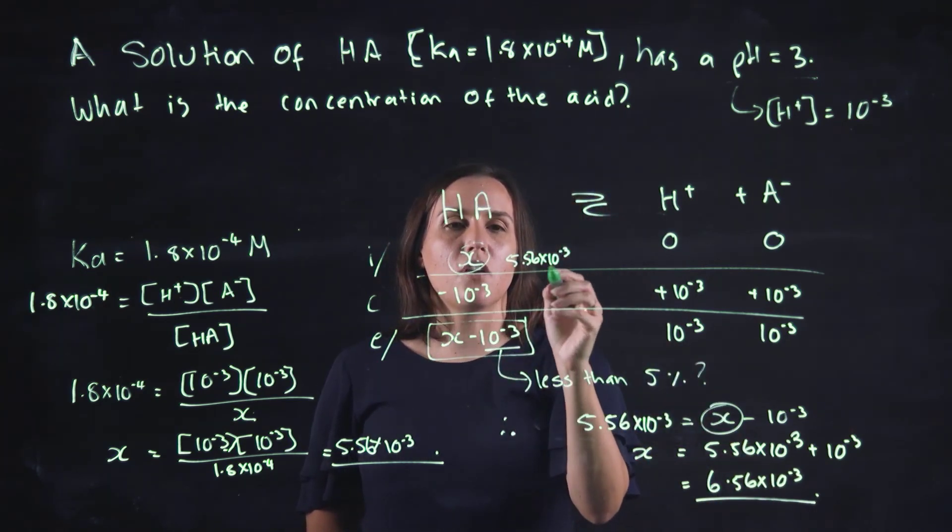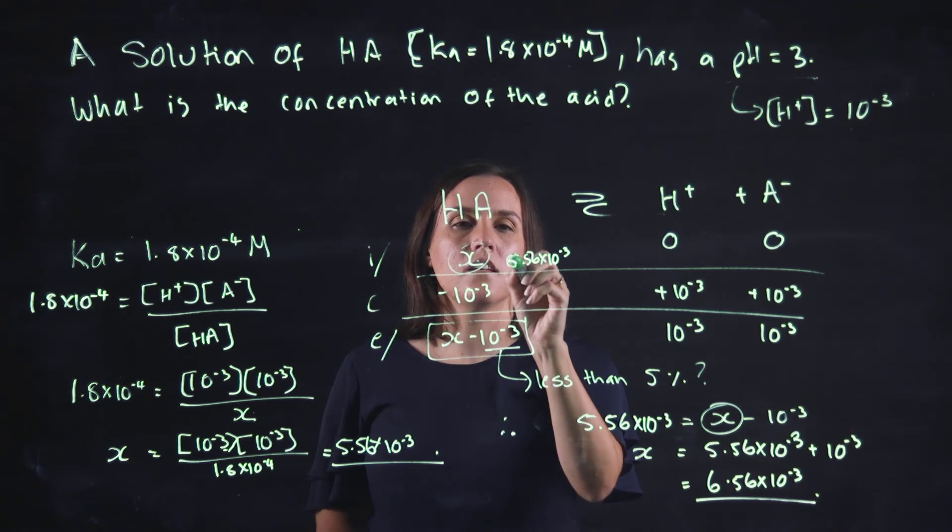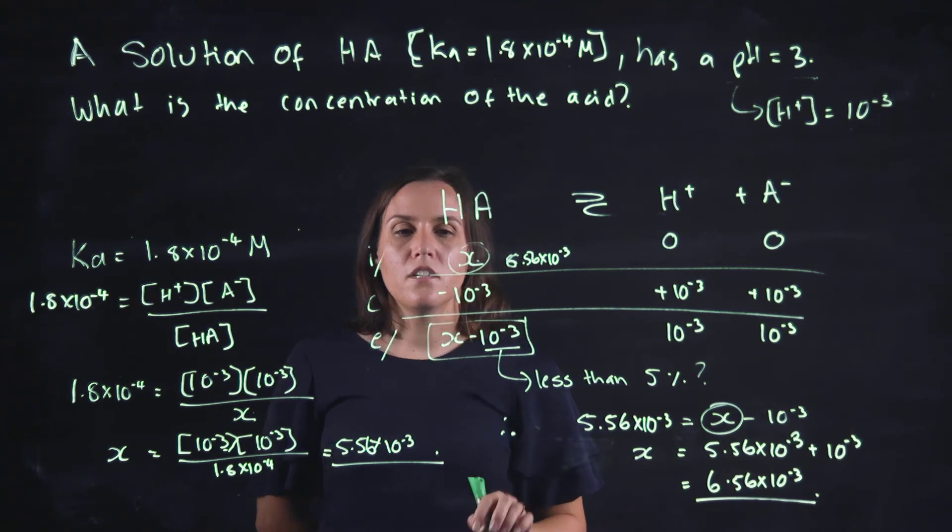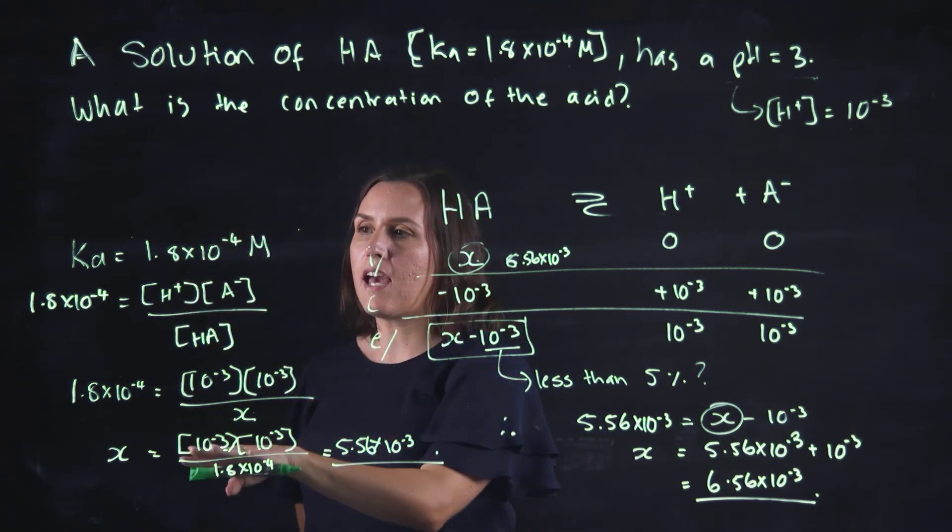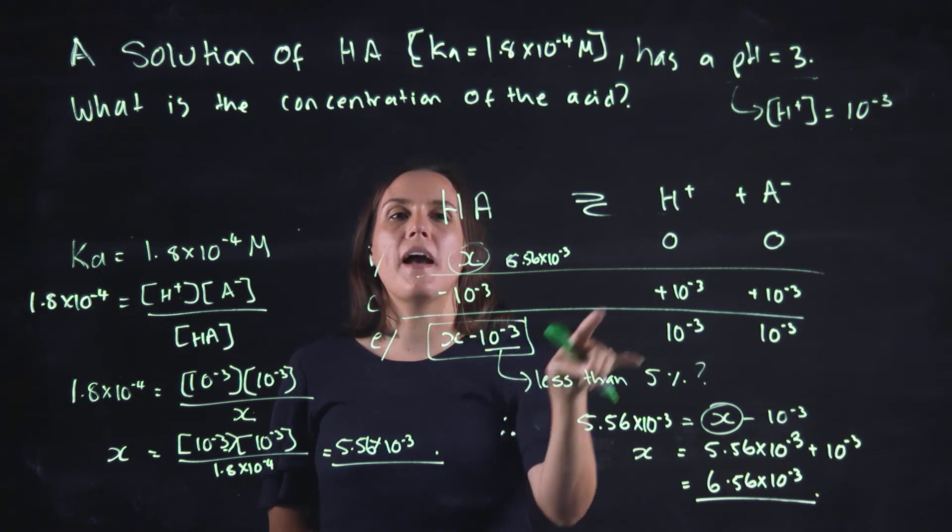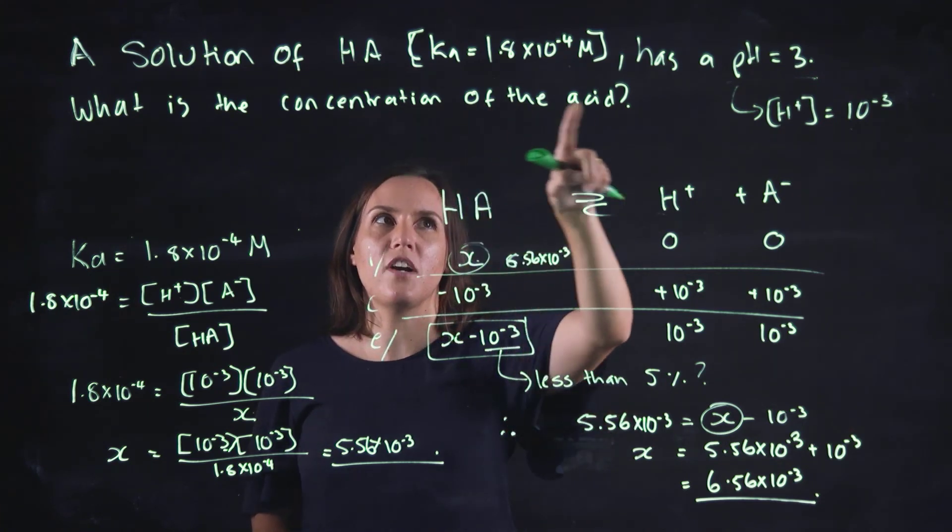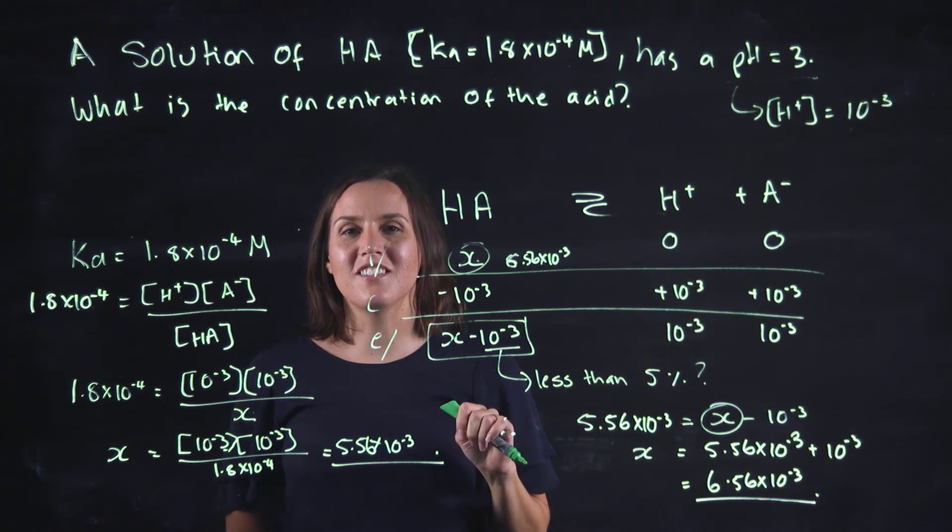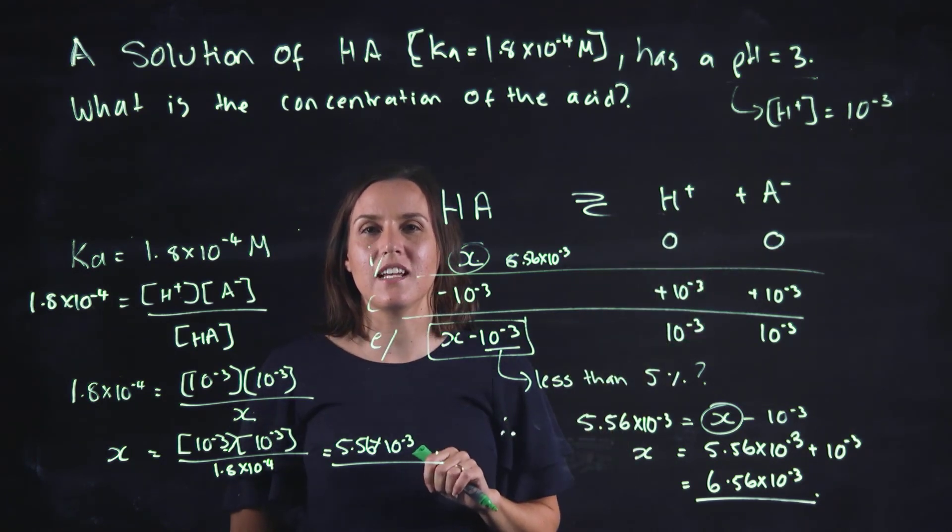So when we're working this out, this would be 6.56 by 10 to the minus 3. So the value that we get from this Ka is that equilibrium concentration. And then we back solve to give us the concentration of the acid before anything happens. So thank you very much and I'll see you for the next video.